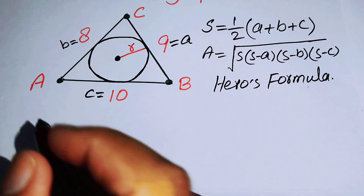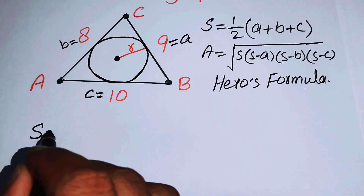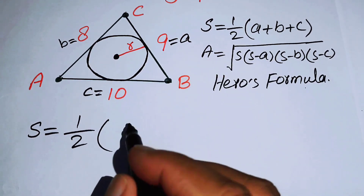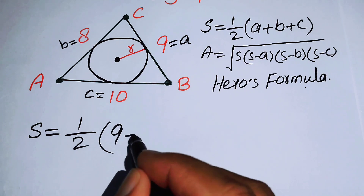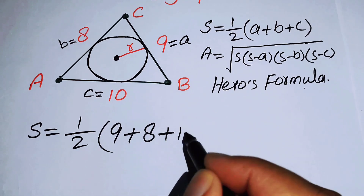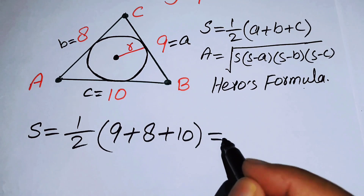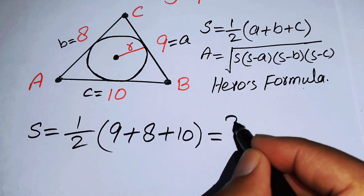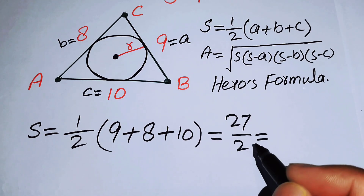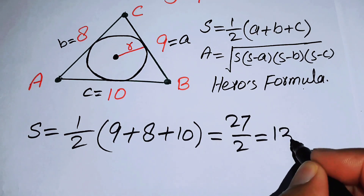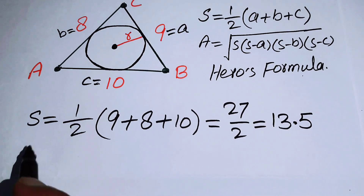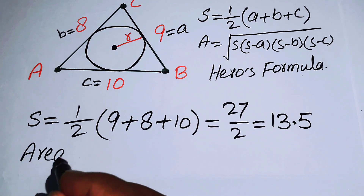We put the values of a, b, and c into the semi-perimeter formula: s = ½(a + b + c). The value of a is 9, b is 8, and c is 10. Adding 9 + 8 + 10 gives 27, so s = 27/2 = 13.5.